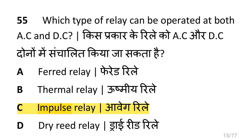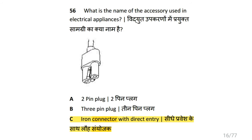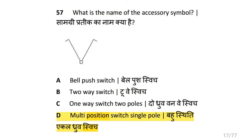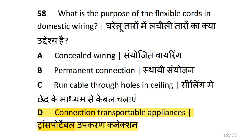Which type of relay can be operated at both AC and DC? That is an impulse relay. What is the name of the accessory used in electrical appliances? That is iron connector with direct entry. What is the name of this accessory symbol? That is multi-position switch single pole. What is the purpose of flexible cords in domestic wiring? That is connection of transportable appliances.